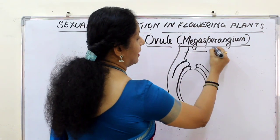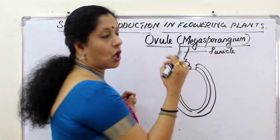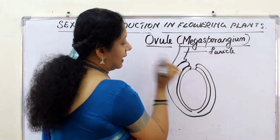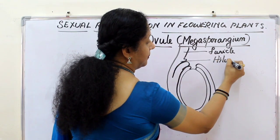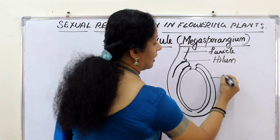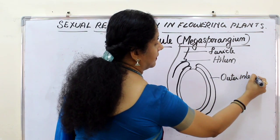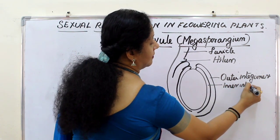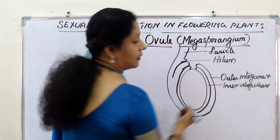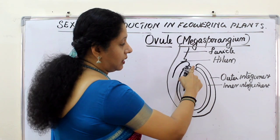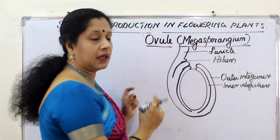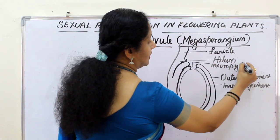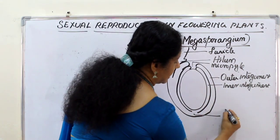The stalk is called the funicle — it is the stalk with which the ovule is attached to the placenta within the ovary. Where the funicle attaches to the integument, that part is called the hilum. The outer protective covering is the outer integument, then there is the inner integument. At the top, there is an opening where the integuments are not closing — that opening is called the micropyle.